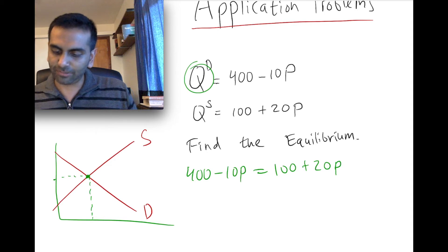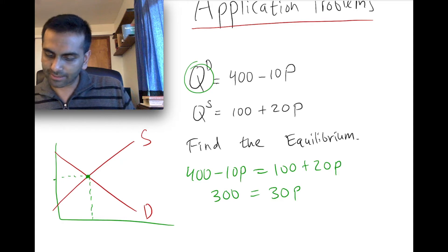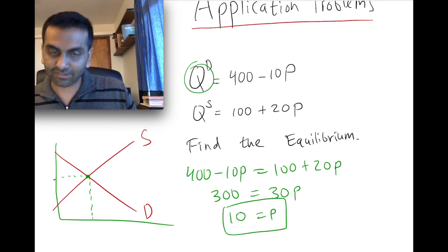And so just doing the algebra, subtracting the 100 from both sides, this becomes 300, and adding the 10p to both sides, this becomes 30p, dividing both sides by 30, we get 10. So that means that your price is 10.